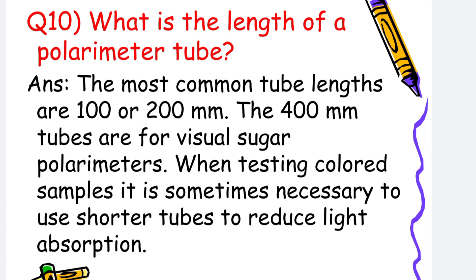What is the length of a polarimeter tube? The most common tube lengths are 100 to 200 mm. The 400 mm tubes are for visual sugar polarimeters. When testing colored samples, it is sometimes necessary to use a shorter tube to reduce light absorption.